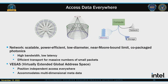Access Data Everywhere is Intel's approach — an incredibly efficient network that delivers high bandwidth but is also very good on small packets. The basic idea is I can get to the data wherever it is. They achieve this through the network and also through what they call VEGAS — their Virtual Extended Global Address Space — which allows you to migrate data and resources to wherever the application needs them seamlessly.